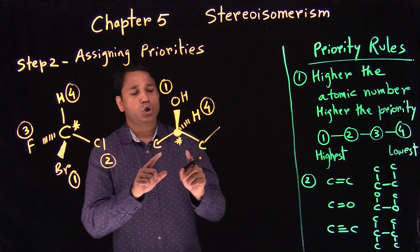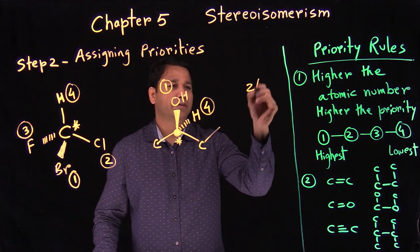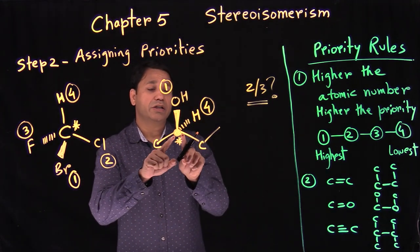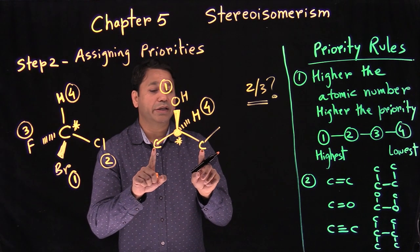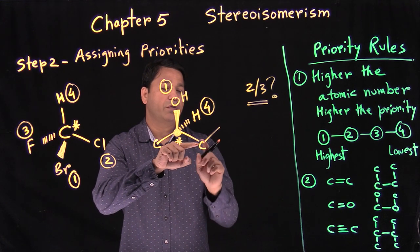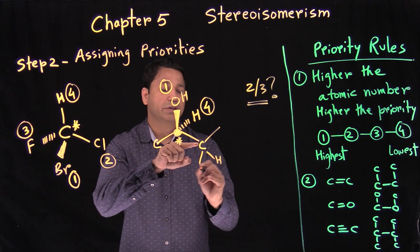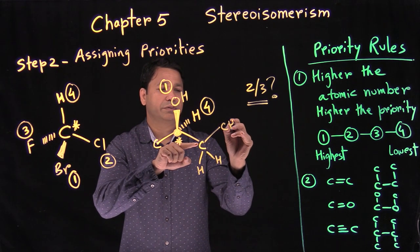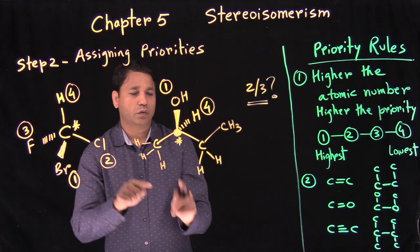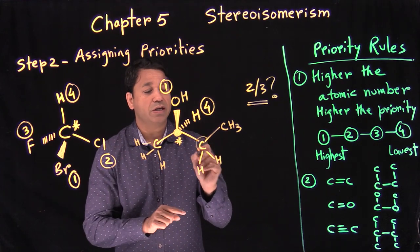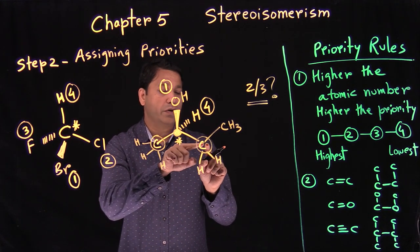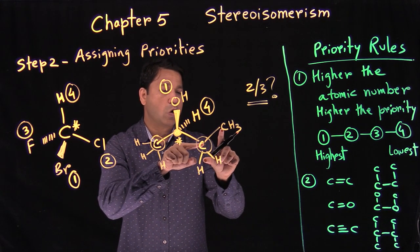Now we're looking between two and three. The rule is: when the first point of contact is the same, then you look at the second point of contact. Starting from this carbon, this carbon is a CH3 carbon. Since these two carbons are the same at the first point of contact, we go to the second point of contact.